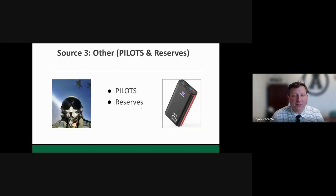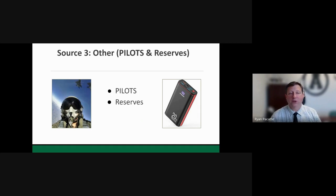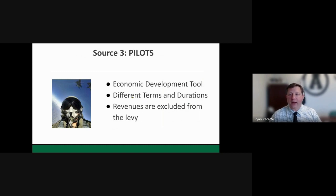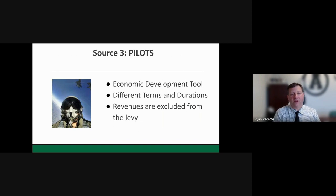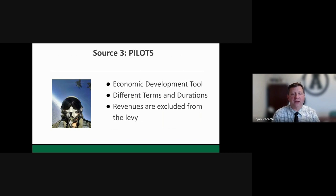The third source of revenue comes from PILOT agreements — payments in lieu of taxes — and district reserves, which together make up about 6-7% of the total school budget. PILOTs are an economic development tool that vary in duration and in the agencies involved. A pilot agreement in our community might have portions paid to the county, the town of Avon, the village of Avon, and the school district — how much each entity gets and how long the agreement lasts varies by agreement. These revenues are excluded from the tax levy calculation.